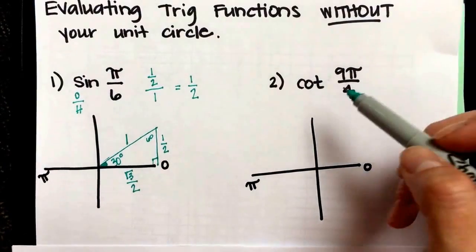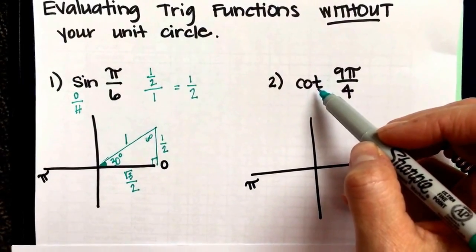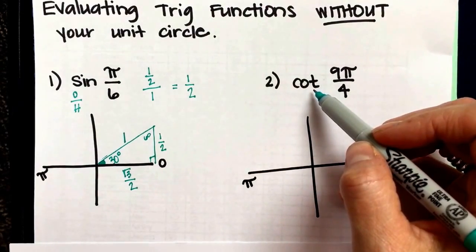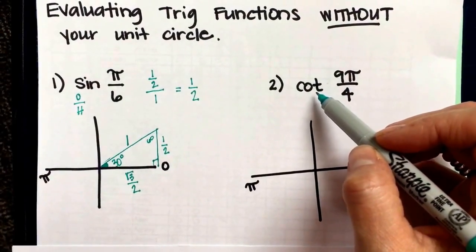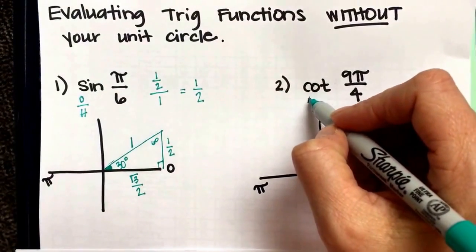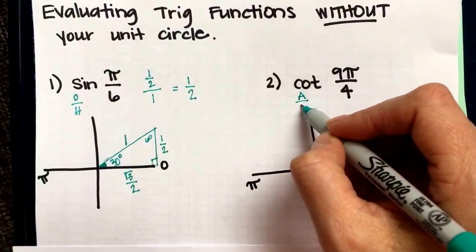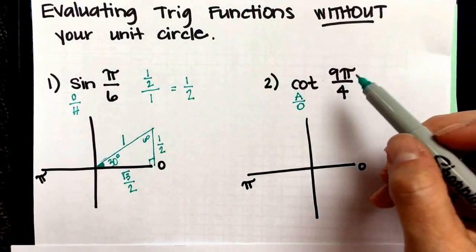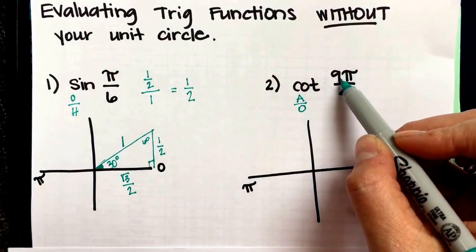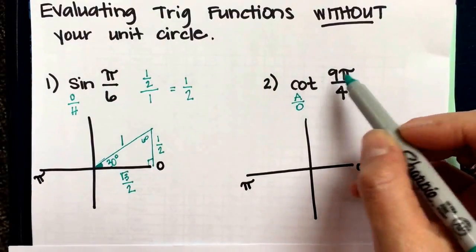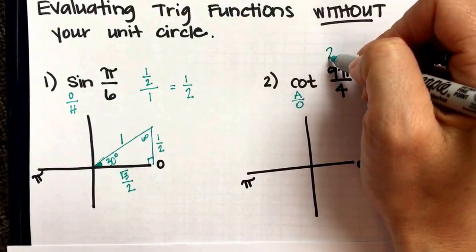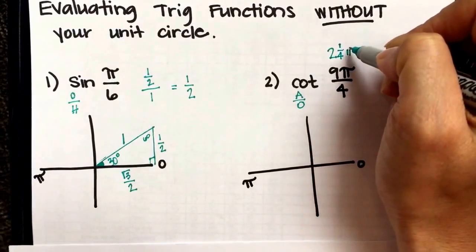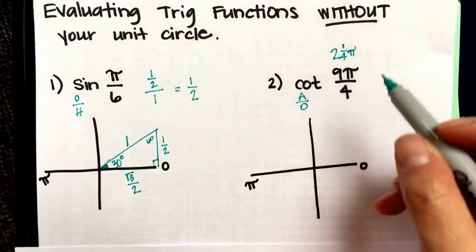So the second one, cotangent. Cotangent is the reciprocal of tangent. Tangent is TOA, is opposite over adjacent. Cotangent is the reciprocal. So cotangent is the adjacent side divided by the opposite side. We want to sketch the angle first. So I'm going to write it as a mixed fraction. 9 divided by 4, 4 goes into 9 twice with 1 left over. So it is 2 and 1 fourth pi.